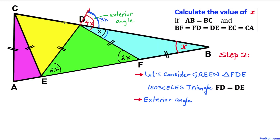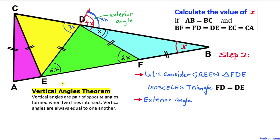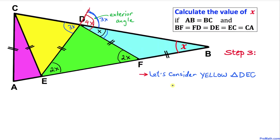This angle is also 3X because they are vertical angles. The vertical angles theorem states that vertical angles are a pair of opposite angles formed when two lines intersect, and vertical angles are always equal to each other.